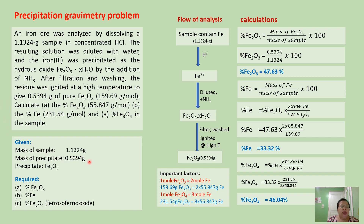Take note that our precipitate here is the ferric oxide. And then we are required to calculate the percent ferric oxide, percent iron, and percent ferrosopheric oxide.